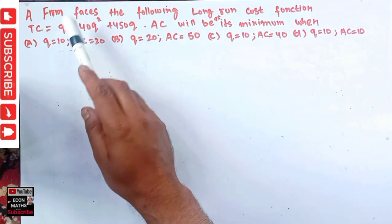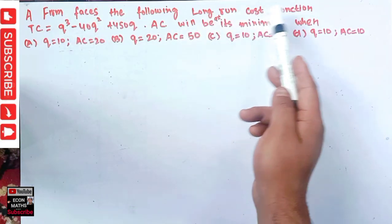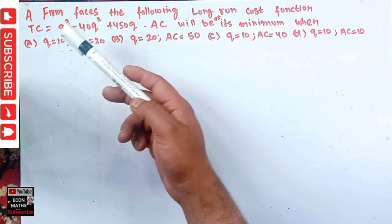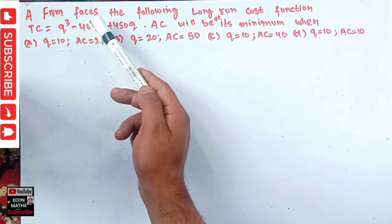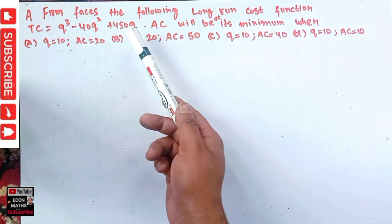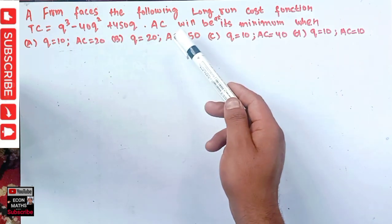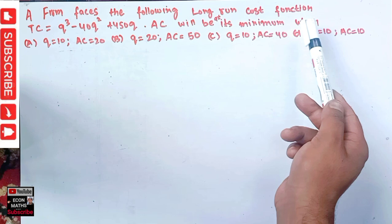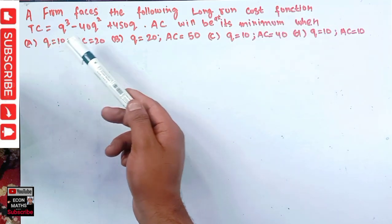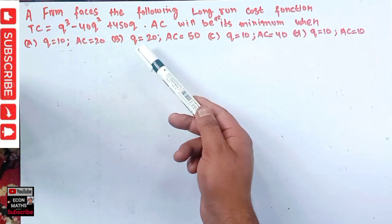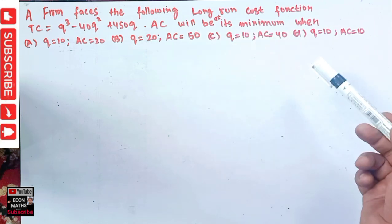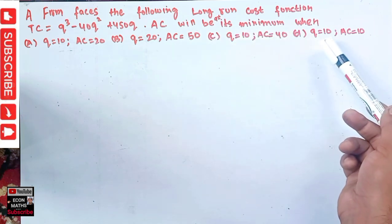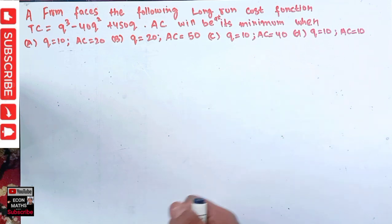The question is: a firm faces the following long-run cost function. Total cost is equal to Q cubed minus 40Q squared plus 450Q, where Q is the quantity. Average cost will be at its minimum when: Q equals 10 and AC equals 20; Q equals 20 and AC equals 50; Q equals 10 and AC equals 40; or Q equals 10 and AC equals 10. We will see what the correct option is.